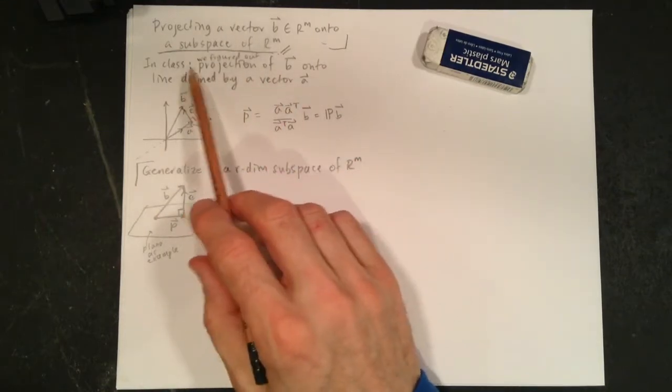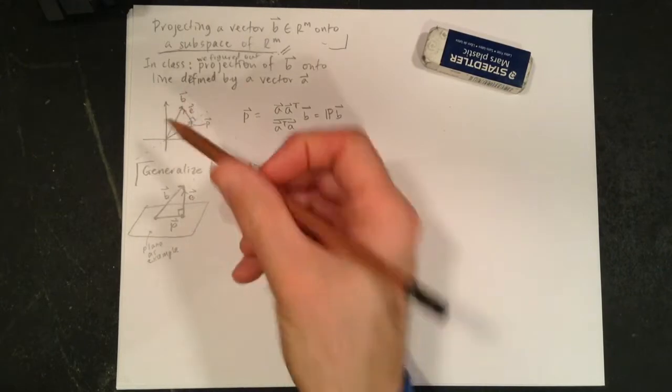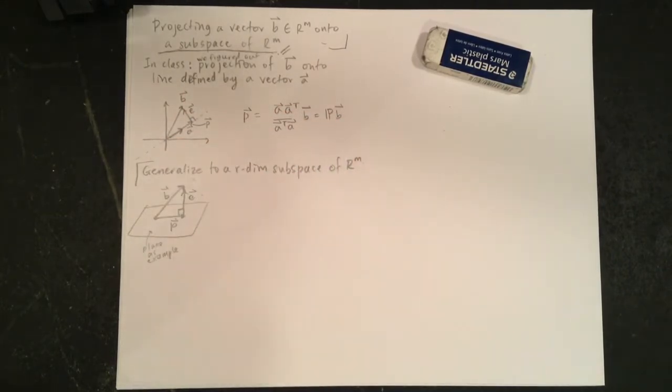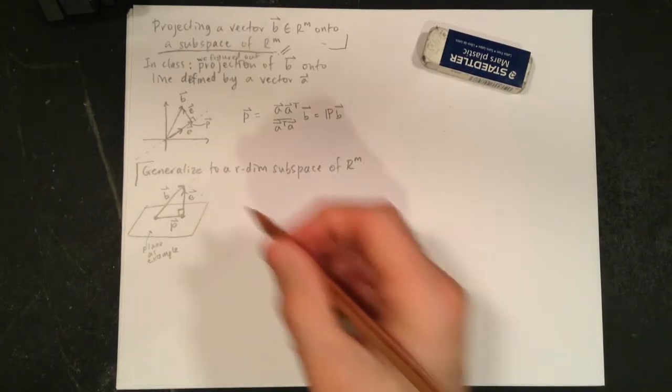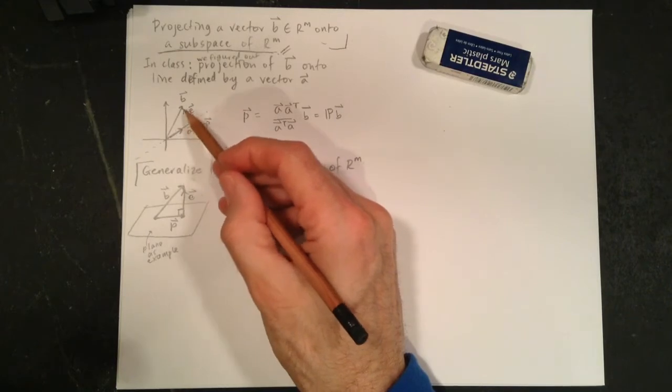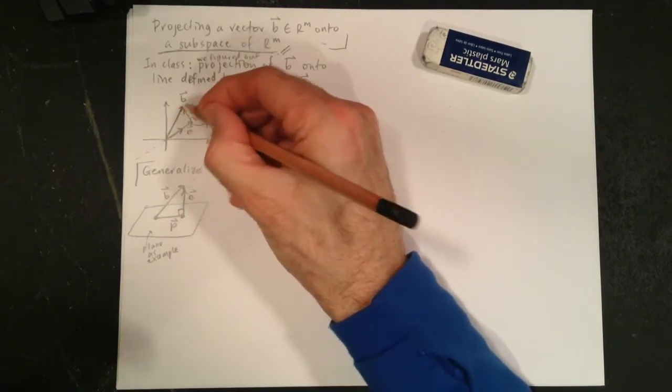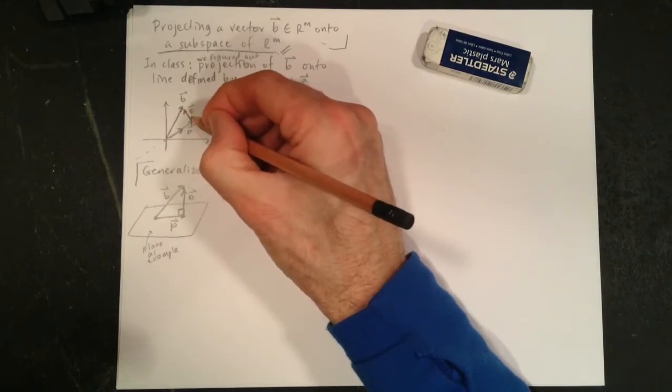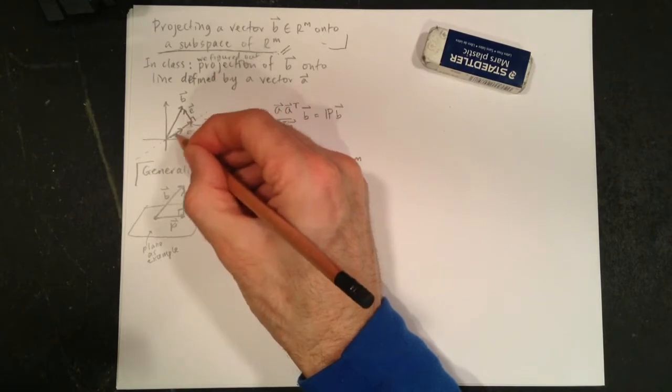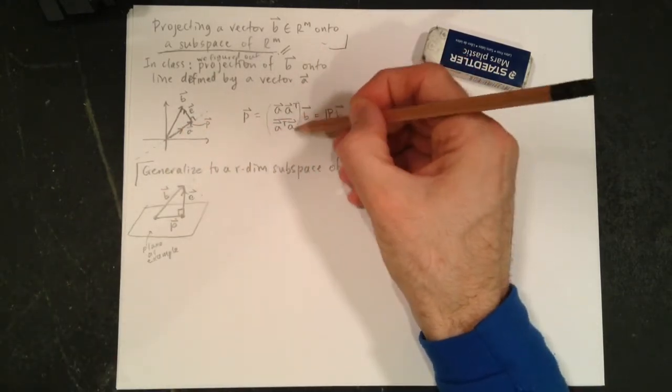So in class we figured out the projection of B onto a line defined by A. So here's A, that's this little character here. So B, if we break into these two parts, so here's B, we're going to break into two parts. E is the error vector, it's at right angles to A, so you can't make any of E out of A, and P is in the direction of A. And so we went through this calculation, and we did some sneaky things.